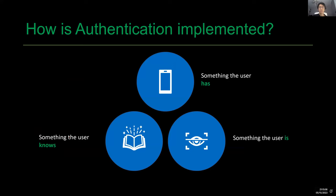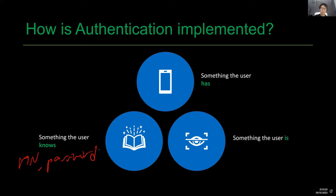How is authentication implemented? It falls down to three categories: number one, something that the user has; number two, something that the user knows — a PIN or a password that only the user knows; and number three, something that the user is — this is your biometrics: your iris scan, your face, your fingerprint — something about your physical entity that distinguishes you from other people.